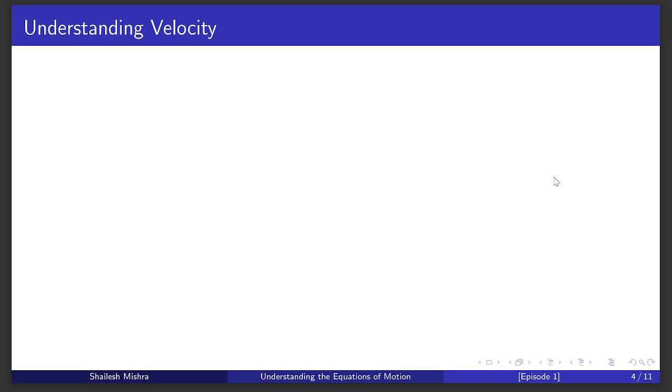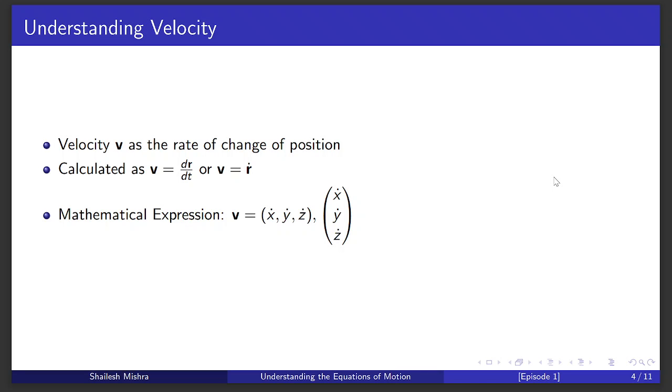Next up is velocity, symbolized as v. It's all about how fast the particle's position changes. In math we say it's the derivative of the radius vector with respect to time, written as v equals dr/dt or more simply v equals ṙ.